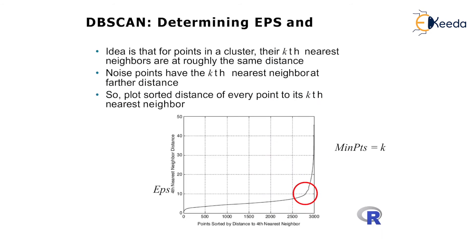For determining eps: the idea is that for points in a cluster, their k-th nearest neighbors are at roughly the same distance, while noise points have their k-th nearest neighbor at a farther distance. Plot the k-th nearest neighbor distance for every point — minimum points is your k. Using that graph, we can identify the optimal eps value. This concludes our look at the DBSCAN clustering algorithm.